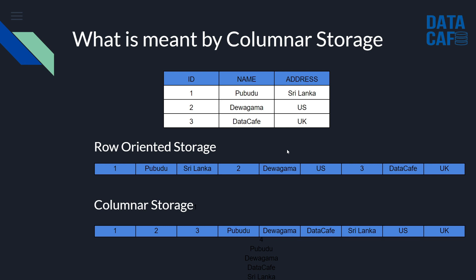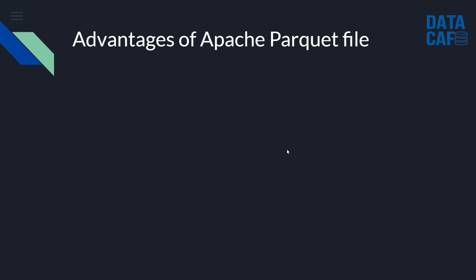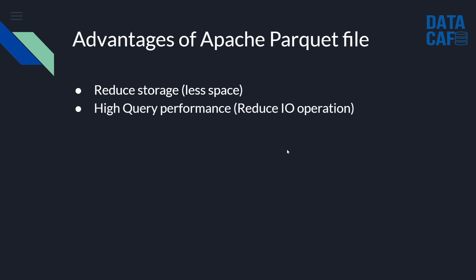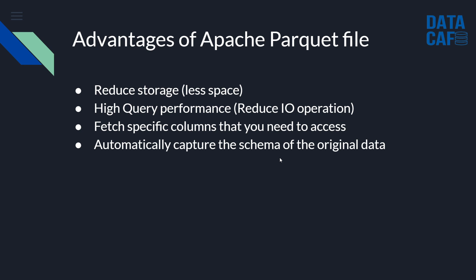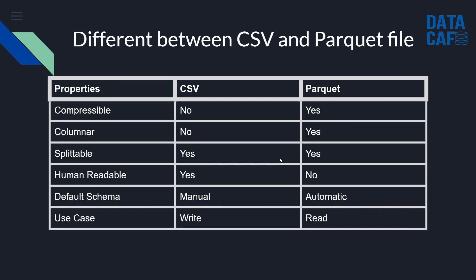Parquet uses columnar storage, which makes read operations more powerful than CSV and JSON formats. The advantages of Parquet include: reduced storage and less space usage, high query performance with reduced I/O operations, the ability to fetch only the specific columns you need, and automatic capture of the schema of the original data.